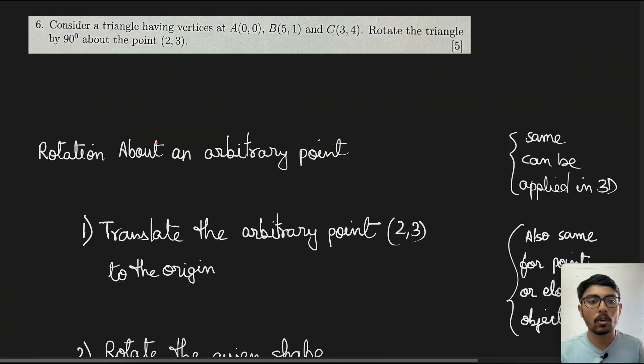Today we are going to look at a new topic in the computer graphics tutorial which is rotation about an arbitrary point. Consider a triangle having vertices at A(0,0), B(5,1), and C(3,4). Rotate the triangle by 90 degrees about the point (2,3).